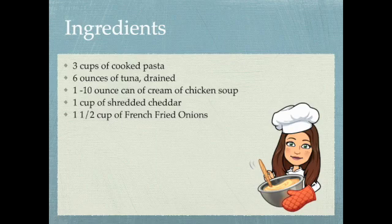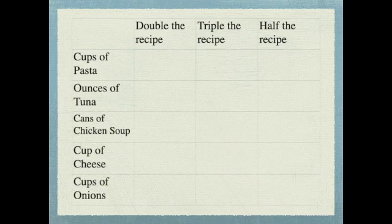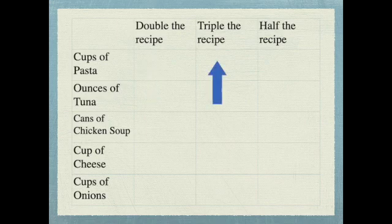But you know if I'm cooking it for me, I'm just going to leave out the tuna, right? Okay, so you have a chart that looks like this. And what we're going to do is we're going to double the recipe and then in the second column, we're going to triple the recipe and in the last column, we're going to cut the original recipe in half. But pay attention to that can of chicken soup because you can't cut a can in half.